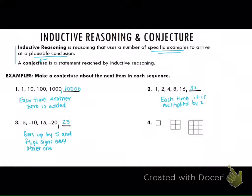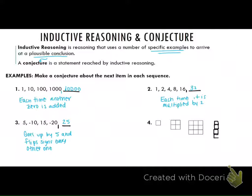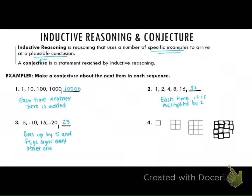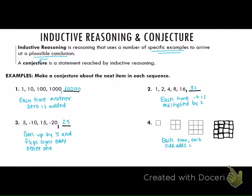Desiree, for number four, what do you think the next boxes are going to look like? We have a one by one, a two by two, a three by three — so what do you think it's going to be? A four by four. So it goes up by one each time — each slide adds one.